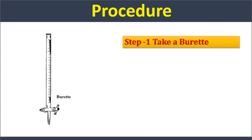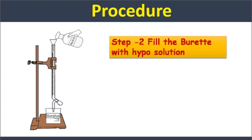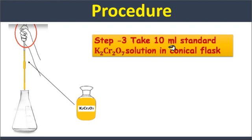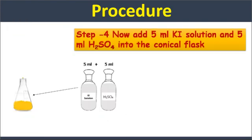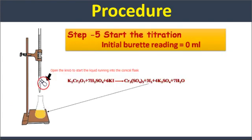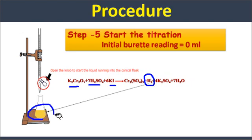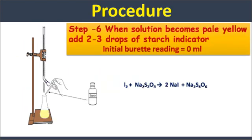First step: take a burette and fill it with hypo solution. Take a conical flask and add 10 ml of standard potassium dichromate solution using a pipette. Now add 5 ml of potassium iodide and 5 ml of H₂SO₄ to the dichromate solution. H₂SO₄ provides the acidic medium while potassium iodide provides the iodine. The dichromate reacts with KI and liberates iodine, turning the solution brown.